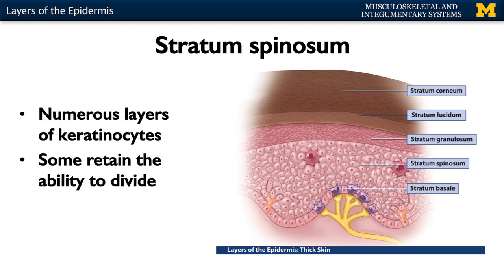Moving more superficially from stratum basale, you have the stratum spinosum. This is composed of numerous layers of keratinocytes almost exclusively — though melanocyte processes and macrophage Langerhans cells can also be present. The majority are keratinocytes that are still able to divide and create new keratinocytes.